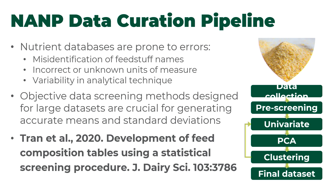Through NANP, we've published on our approach to curating large datasets. We know there are problems: misidentified ingredients, incorrect units of measure, variability in analytical techniques. Even wet chemistry — the gold standard — can have differences between laboratories. This requires an objective, automated data screening method by which we can identify outliers to get accurate means and, more importantly, accurate standard deviations so we can understand the precision of the data in the database. The value of the database is only as good as how clean those data are.